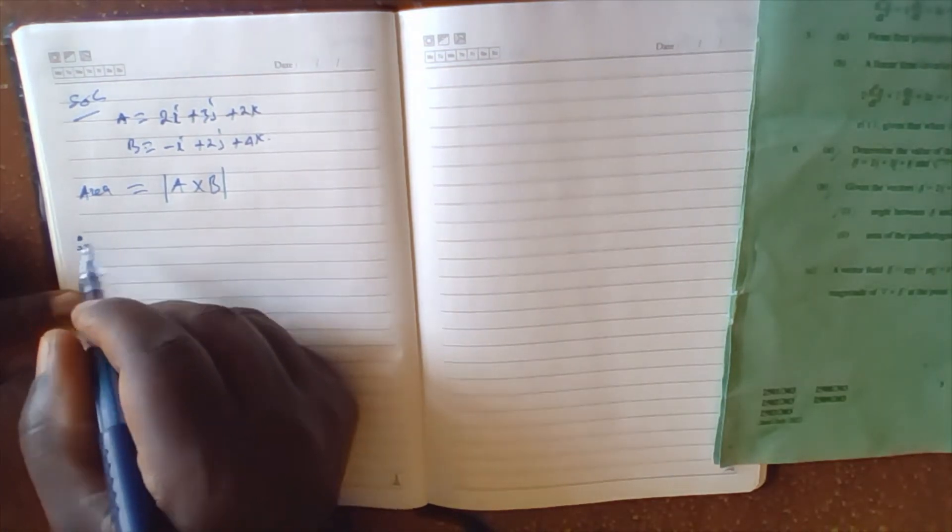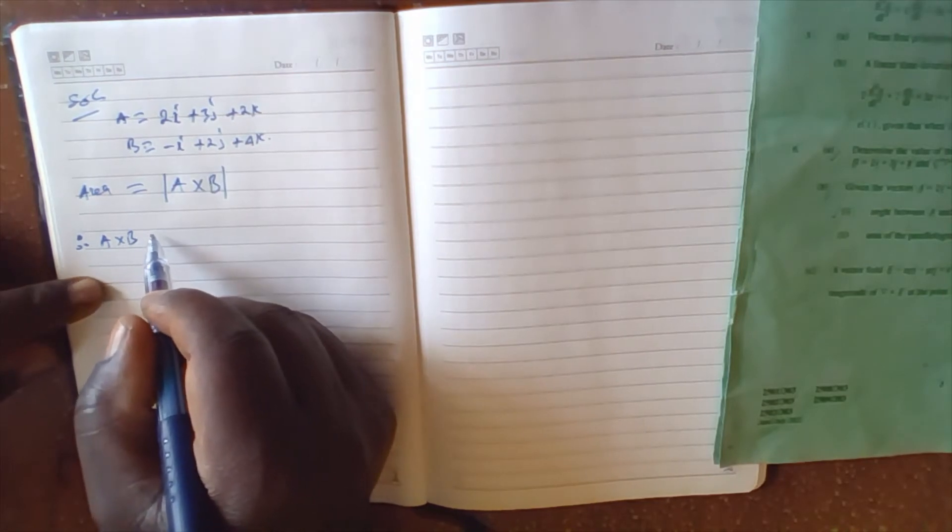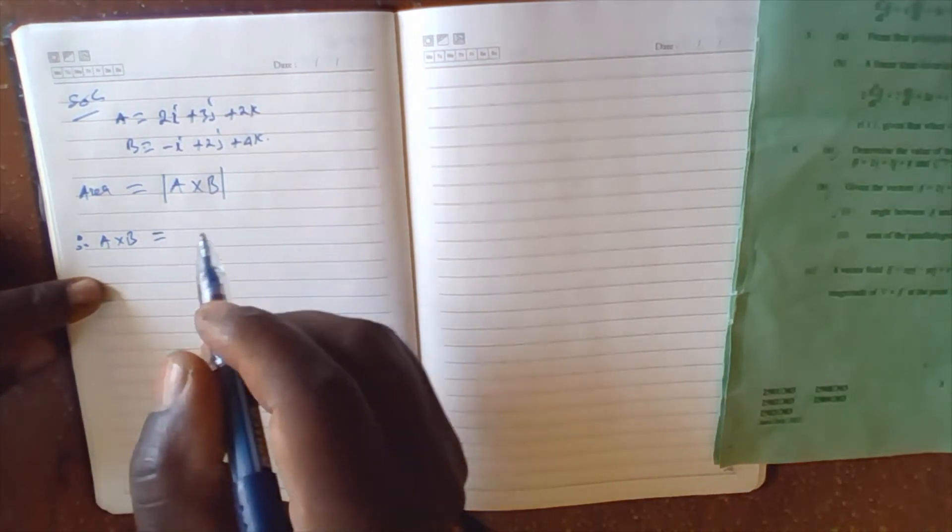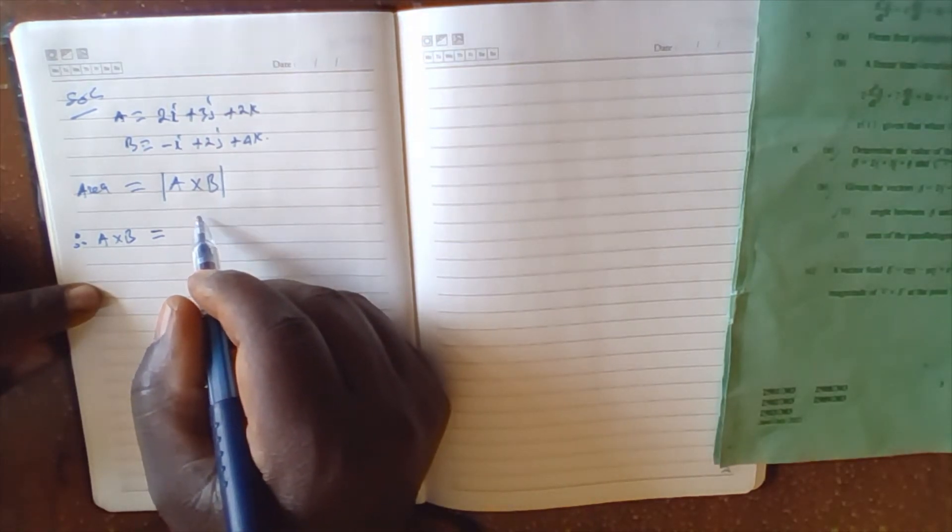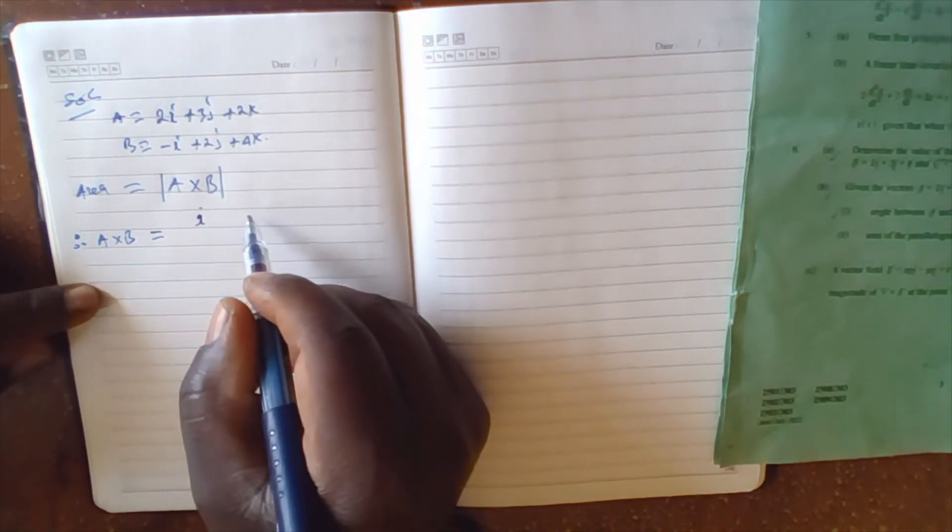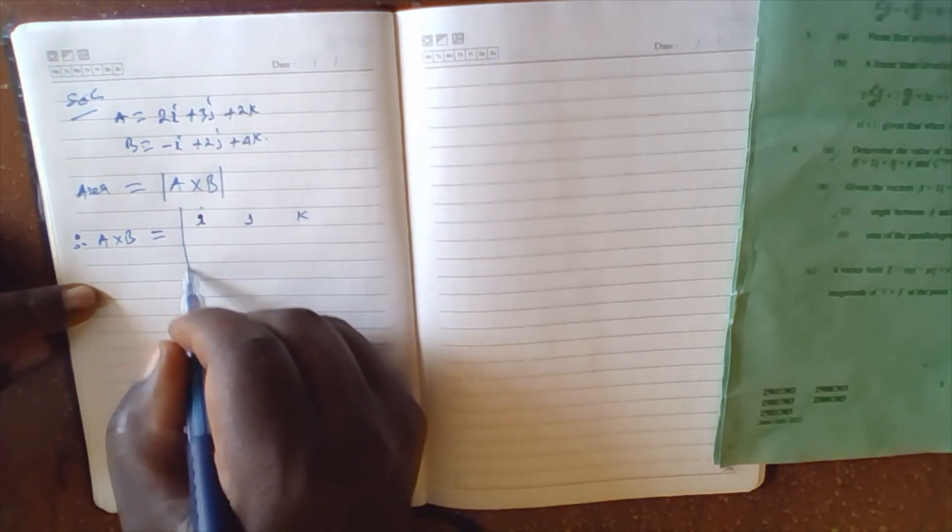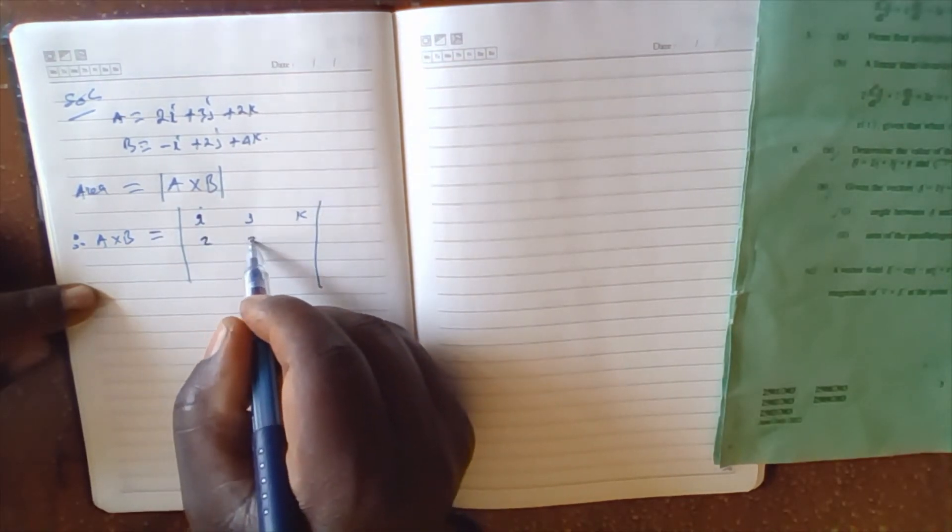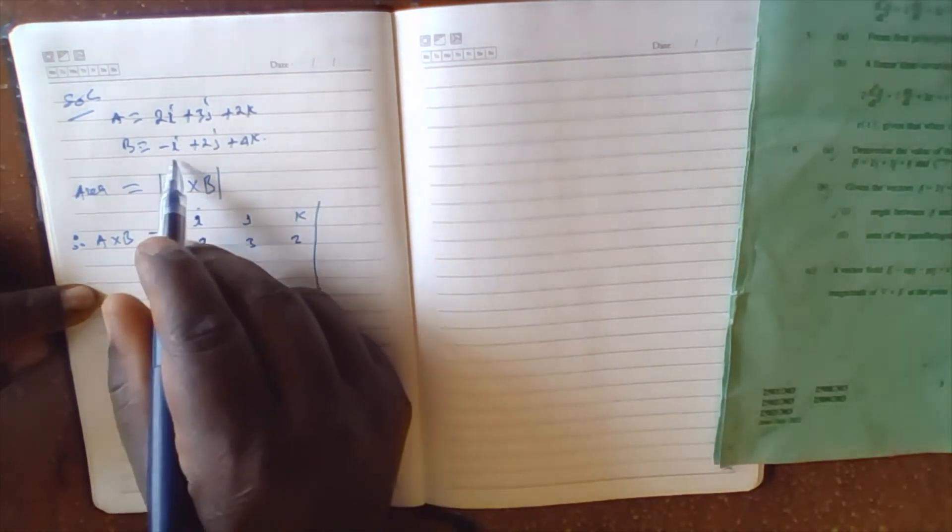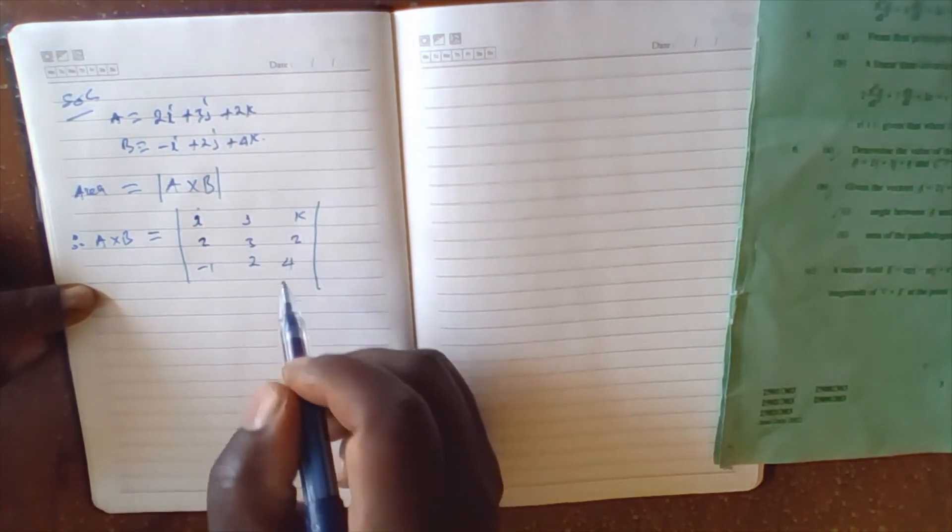Therefore a cross b will be equal to, we have the unit vectors i, j, k, and then a is given by 2, 3, 2, and b is given by negative 1, 2, 4.